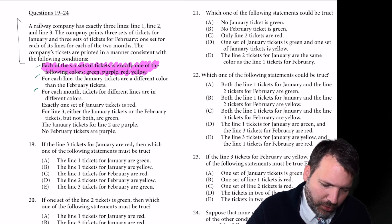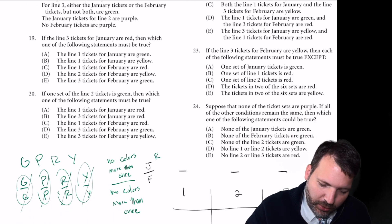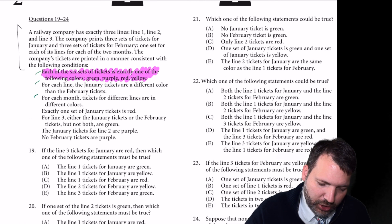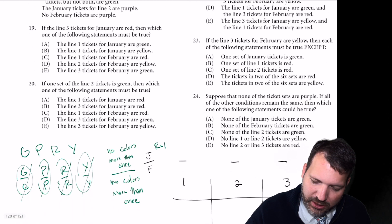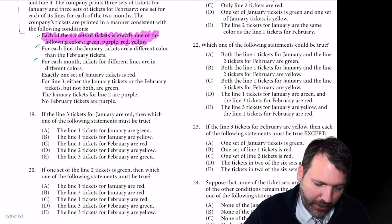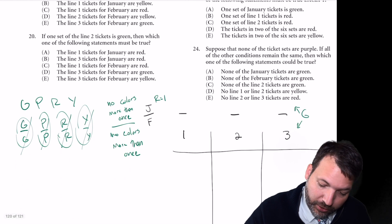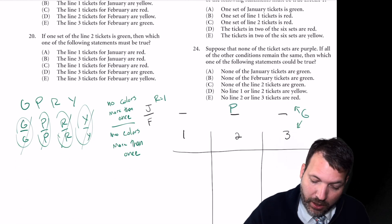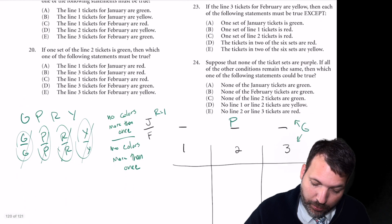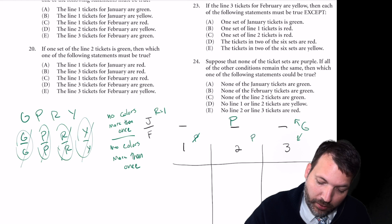Let's see, we've done each of those first three. Exactly one set of January tickets is red. Okay, so we will use red somewhere on top. For line three, either the January tickets or the February tickets, but not both, are green. So we're going to have to use green somewhere for line three. The January tickets for line two are purple. Favorite kind of clue. We can just put that right on the diagram. No February tickets are purple. Okay, so we never use purple tickets for February.